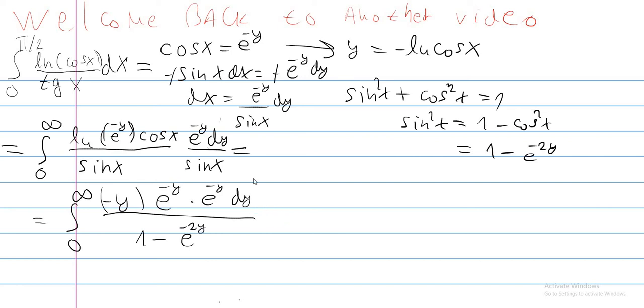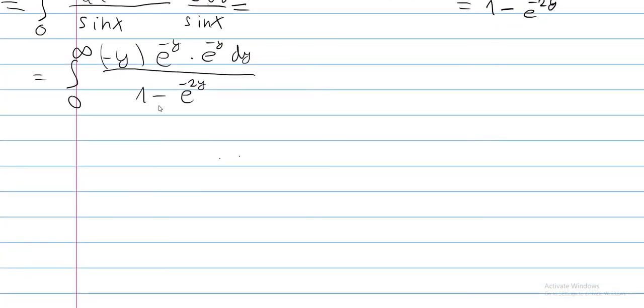So what can we do now? Well, the only thing we can do is expand the bottom part into a series. So we will take minus in the front, so we will have an integral from 0 to infinity, series going from n equals 0 to infinity, e to the minus 2y to the n, e to the minus 2y, y dy. We get e to the minus 2y from this part. And now we can interchange the sum and the integral.